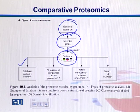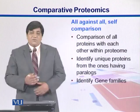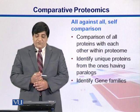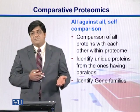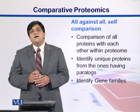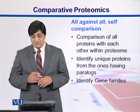We can also do comparison of proteins between different organisms and find clusters of correlated proteins in terms of their sequences and functions. First, we do an all-against-all self comparison, comparing each protein within the same proteome with other proteins, to identify unique proteins and proteins that have paralogues.